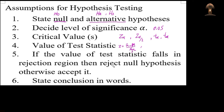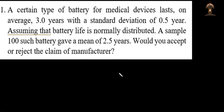Finally, we write our conclusion in words. Let us move to problems to make it clear how we apply hypothesis testing to test any hypothesis for the population parameter mean or variance. This is our first problem: a certain type of battery for medical devices lasts on average 3 years — that is our null hypothesis, because that is the claim of the manufacturer. So that is H0.